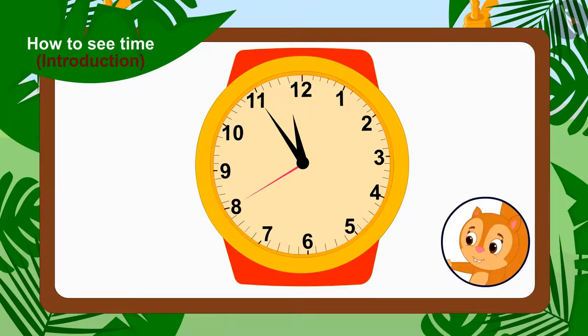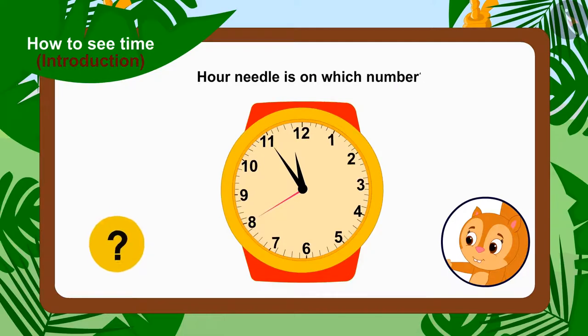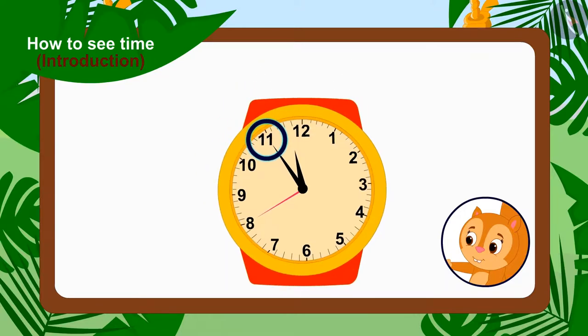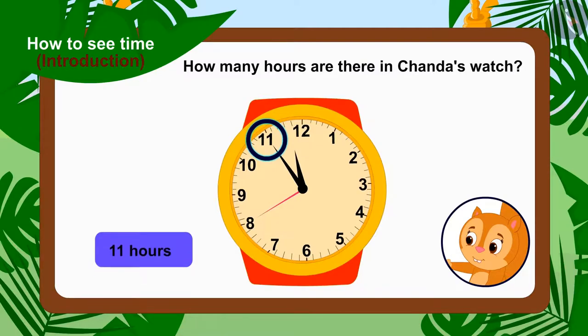This is the time in Chanda's watch. Children, can you tell what number is the hour needle on? Yes, between 11 and 12. Whenever the hour needle is between any two numbers, then we have to take the smaller number of the two numbers as our number. So, how many hours are there in Chanda's watch? Yes, 11 hours.